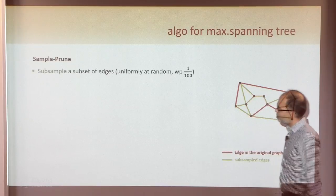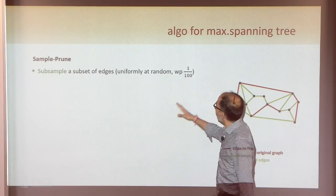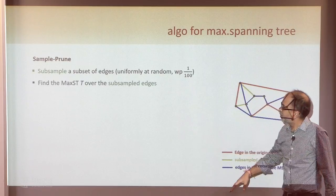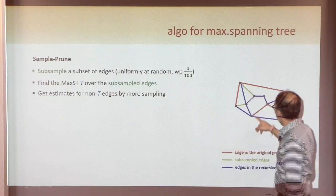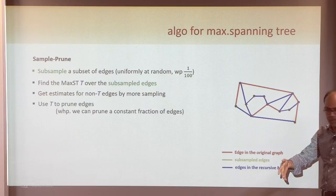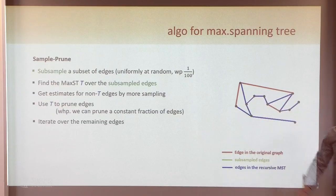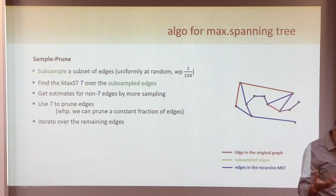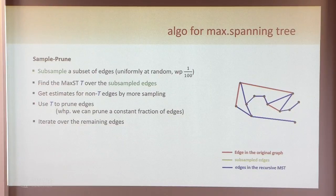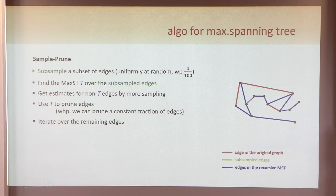Our algorithm is very directly inspired by this: subsample a subset of edges — maybe one hundredth of edges — find a max weight spanning tree over the subsampled edges. You might be making mistakes because of uncertainty, so we union bound over all the mess. Get estimates for the non-tree edges by more sampling. Prune further for the remaining edges. The analysis is very similar in spirit to the median sampling technique. The main idea is the combinatorial structure allowed us to get the algorithm to work.